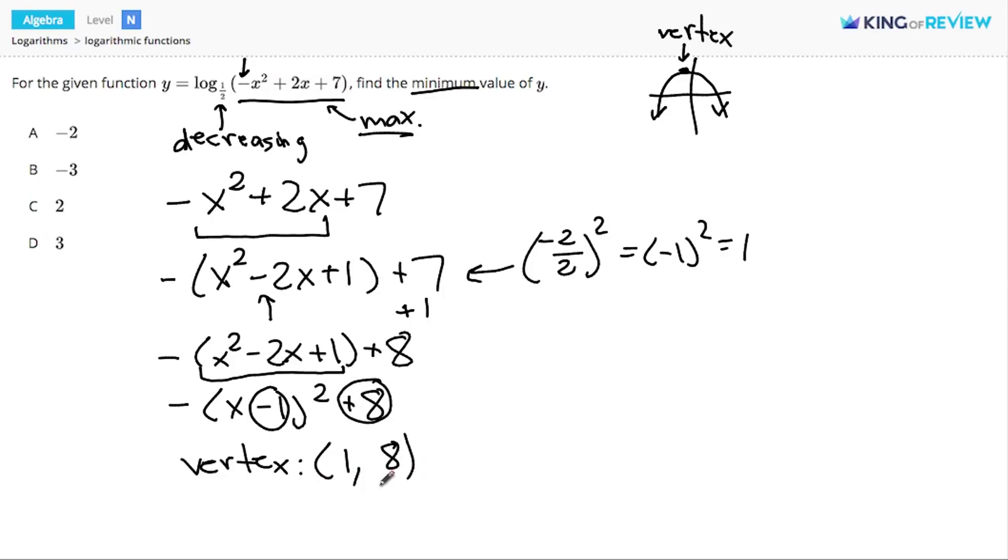What matters to us here is the highest value of this equation, of this expression. We just figured out that the highest value of this equation is 8. So if I want the minimum value of the log, this means that I have to take the log base 1 half of 8. 8 is the highest that this expression can be, which means this will give me the lowest possible value for y.